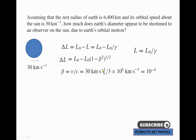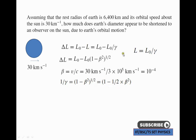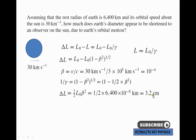Beta equal to v/c equal to 30 kilometers per second divided by 3 times 10 to the power 5 kilometers per second, giving beta equal to 10 to the power minus 4. Using the binomial approximation, 1/gamma equals approximately 1 minus (1/2) beta-squared. Therefore delta-L approximately equals (1/2) L-naught beta-squared. Substituting: delta-L equal to (1/2) into 6400 into (10 to the power minus 4) squared, giving approximately 3.2 centimeters.